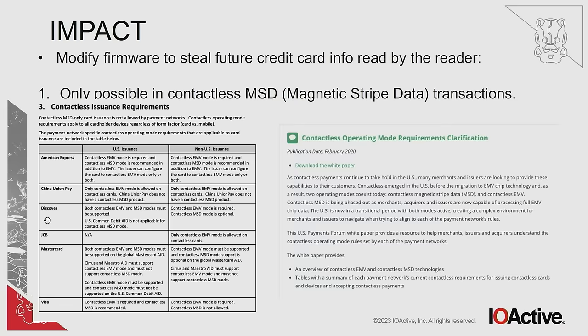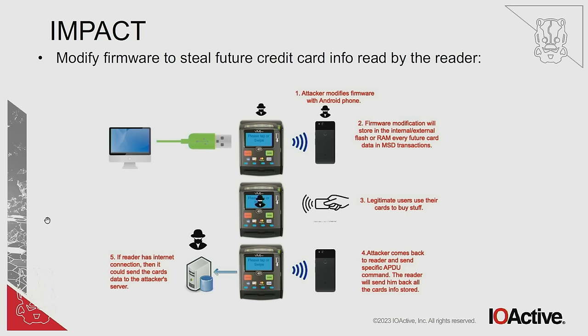Another attack scenario: especially in the US, there are contactless magnetic stripe data (MSD) transactions where the full credit card number and expiration date are sent in clear text to the NFC reader. That data would be in clear text in the reader's memory. Malware installed on the compromised device could store those credit card numbers in memory or flash, then if the device has internet connection, send them to an attacker's server. If not, the attacker can return later, send a special command to the malware over NFC, and exfiltrate the stored credit card numbers wirelessly.